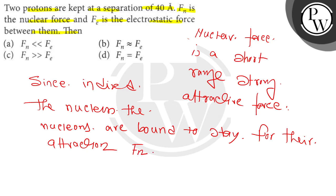So Fn must be much greater than Fe, or the nuclear force must be greater than the electrostatic repulsion force. If we look at the options, the answer is the correct answer is option C. Best of luck, thank you.